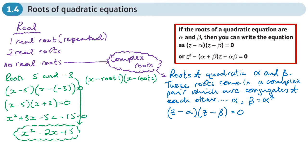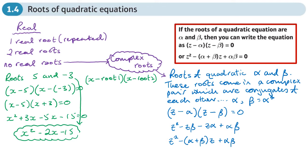If we multiply out the brackets as we did with the real ones, we get z² minus z·beta minus z·alpha plus alpha·beta. Factorising the middle terms, we get z² minus (alpha + beta)z plus alpha·beta.